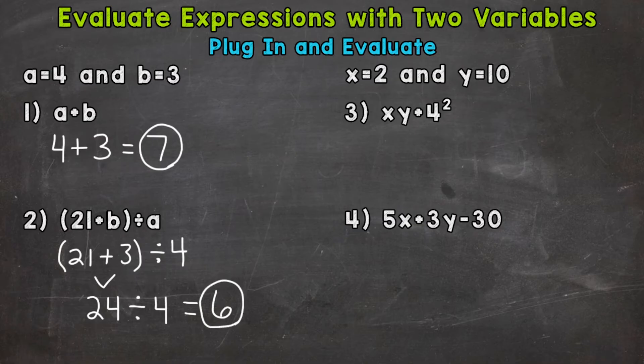On to number 3, where we have x times y plus 4 squared. Whenever you have a letter next to a letter or a number next to a letter, it's going to be multiplication. So let's plug in and evaluate. x is going to be 2 times y, which is 10, plus 4 squared.